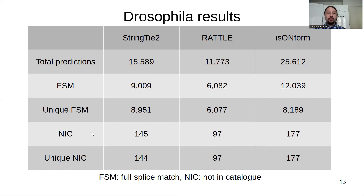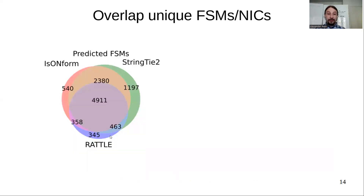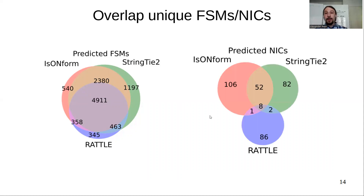Looking at how unique FSMs and NICs are shared between tools: all three tools predicted almost 5,000 FSMs in common, but RATTLE failed to predict approximately 2,400 FSMs that IsoNForm and StringTie2 found. For NICs, only 8 NICs were common to all three tools, while IsoNForm and StringTie2 share 52 NICs that RATTLE does not find. Each tool also finds some unique NICs that no other tool identifies.